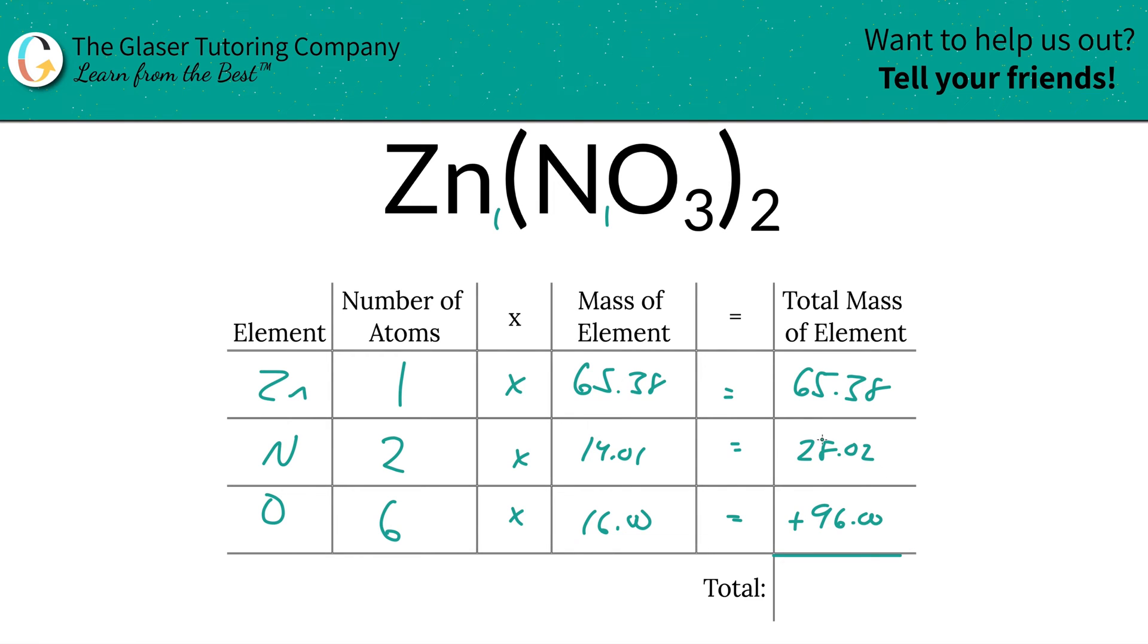And then to find the total mass of the entire compound, just simply add up all the total masses of all the individual elements. So this is going to work out to be 189.40. There you have it. That was the total mass. That's the first step.